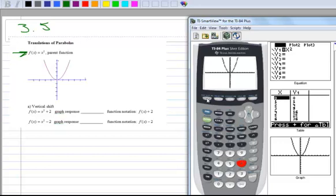Let's go back to y equals, arrow down to y sub 2, and type in x squared plus 2, and now I'm going to graph that.